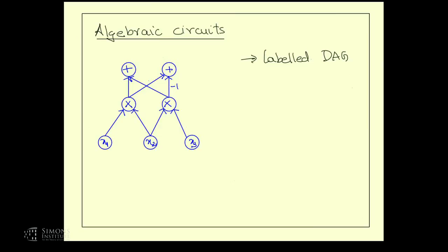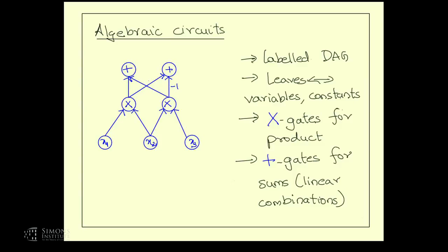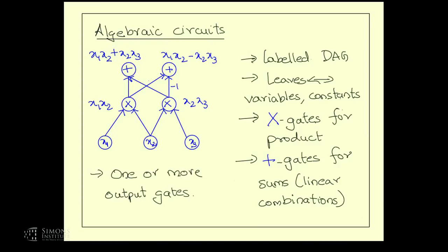Formally speaking, we look at a directed acyclic graph. The leaves of this graph are labeled by the input variables, which take values in the field. The leaves can also be labeled by constants from the underlying field. Then you have product gates that compute products of their inputs, and sum gates that compute sums — or more generally linear combinations — of their inputs. Every gate in the circuit computes some polynomial in the underlying variables, and you have one or more output gates.